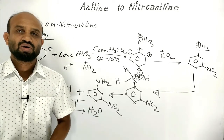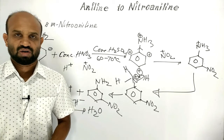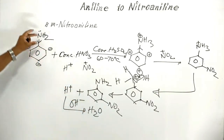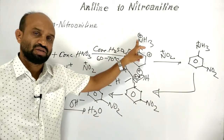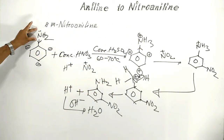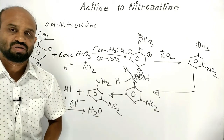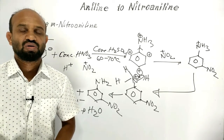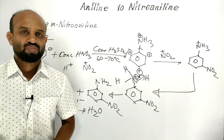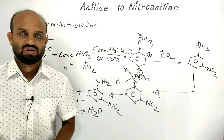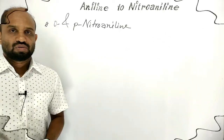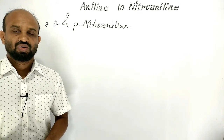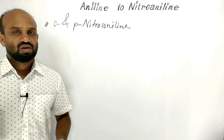Now let's see how we can prepare ortho and para-nitroaniline. Aniline forms meta-nitroaniline because the amino group is protonated. If the protonation of the amino group is protected, then ortho and para-nitroaniline will be formed. Let's see how we can protect the amino group from protonation to produce ortho and para-nitroaniline.